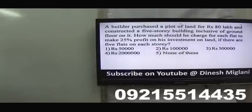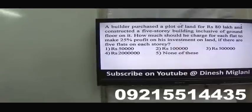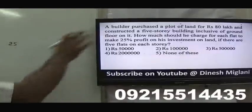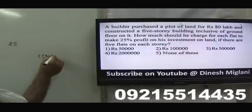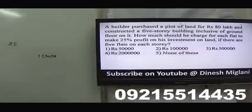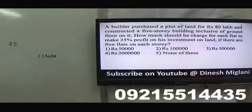A builder purchased a plot for ₹80 lakh and constructed a 5-storey building. How much should he charge per flat for 25% profit on land investment if there are 5 flats on each storey? Total flats = 25. Required total SP = ₹1 crore. Per flat = 1 crore / 25 = ₹4 lakh. Answer: None of these (₹4 lakh).